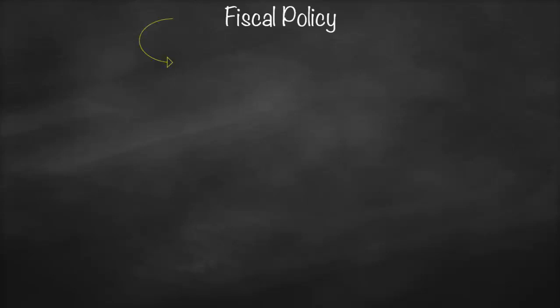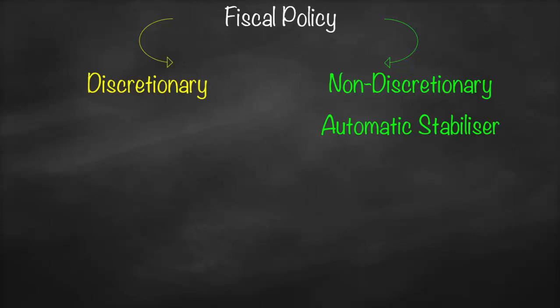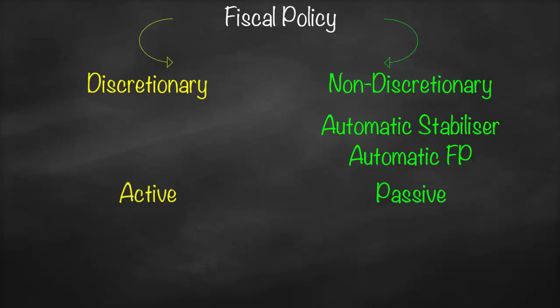When we talk about fiscal policy, we have two types. The first one is called discretionary fiscal policy. The second one is called non-discretionary, which is also called automatic stabilizer — this is the most common name. Automatic fiscal policy or automatic stabilizer is considered a passive policy, while discretionary is considered an active fiscal policy.